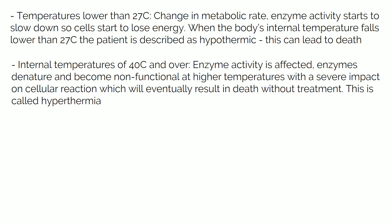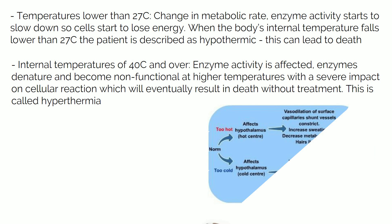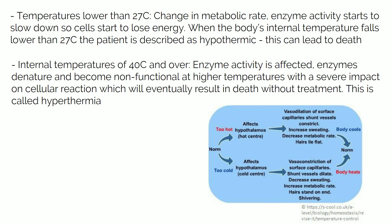A patient with a severely high temperature is described as hyperthermic. When temperature is too high, this is sensed by the hot centre in the hypothalamus, resulting in vasodilation of surface blood vessels allowing heat to be lost to the surroundings — this is why our faces get flushed red when exercising or feeling hot. Increased sweating results in evaporation from the skin, making us feel cooler, and decreasing metabolic rate reduces the amount of heat produced in respiration. These responses act to cool the body by increasing heat loss.